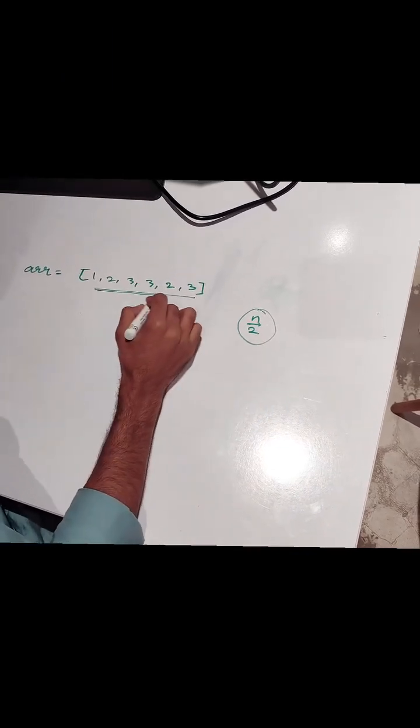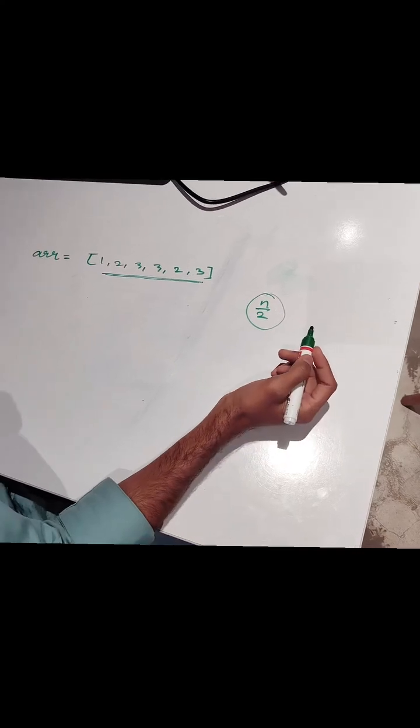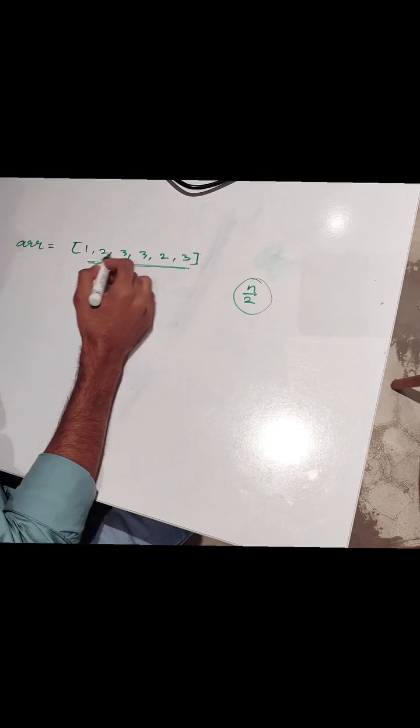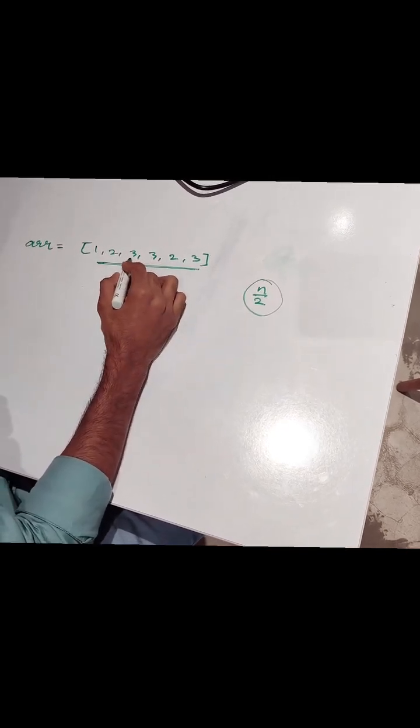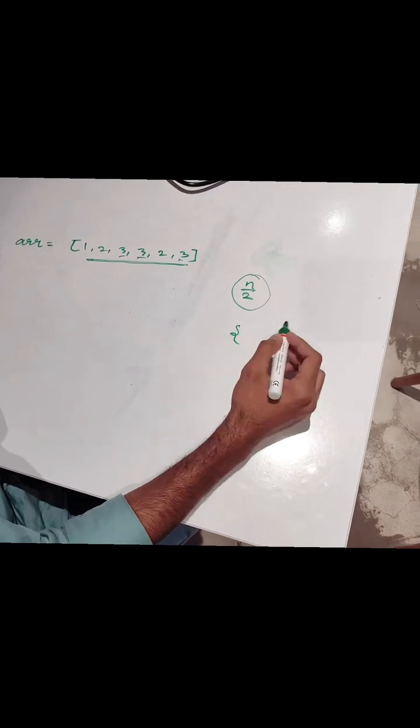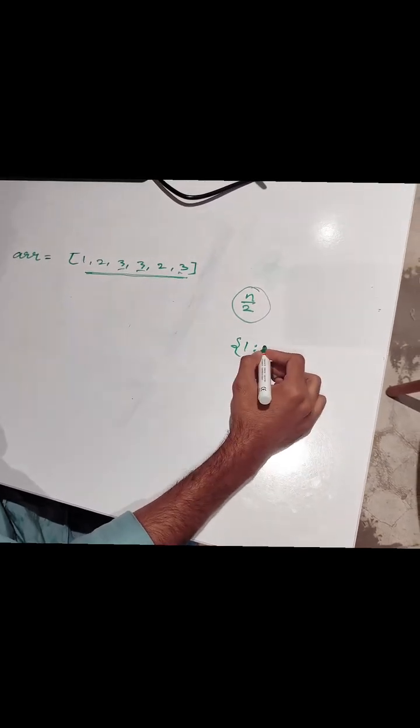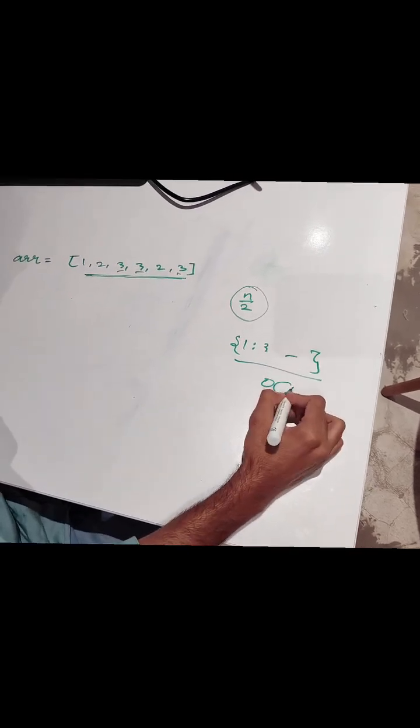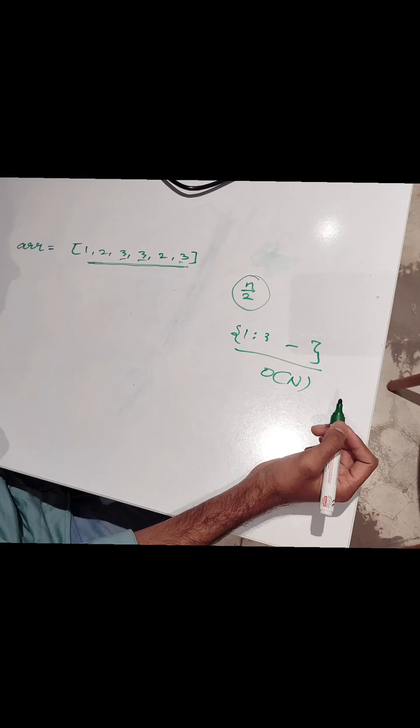So there are multiple approaches to solve this question. Let's see what other approaches could be. One thing is that we can sort this array simply and after that we can count the elements. The other technique is we can do hashing. In hashing we simply mark every element, count the number of elements and we can determine this. But the thing is that the complexity will become O(n) for some reason.